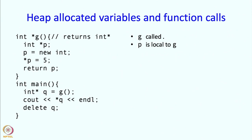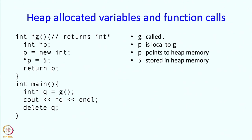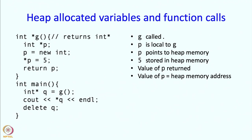Then we execute the new statement: p equals new int. This causes a location in the heap to be allocated and that address is placed in p. So p is now pointing to some location in heap memory. Then we say star p equal to 5 — so star p takes you to that location in heap memory and you place a 5 there. Now we are returning p — the value of p is the heap memory address, so this heap memory address is returned.